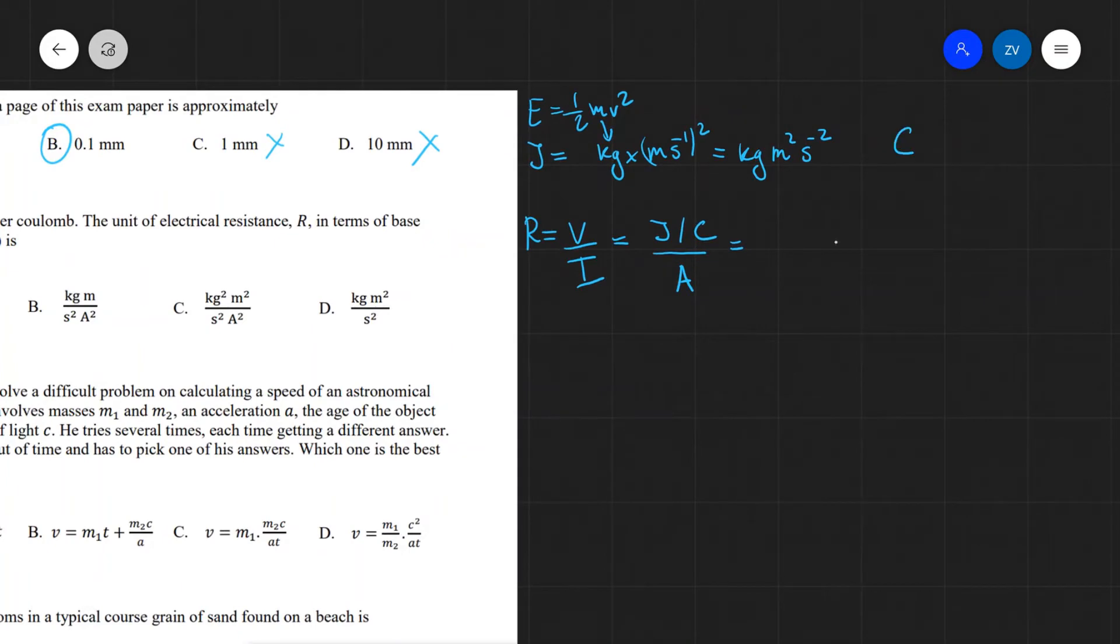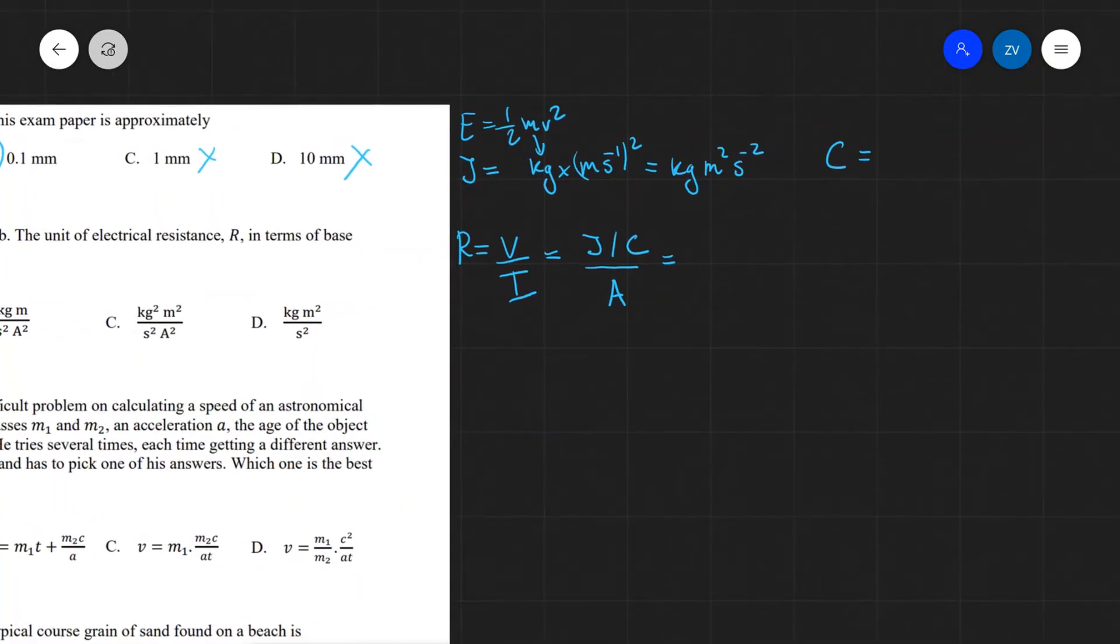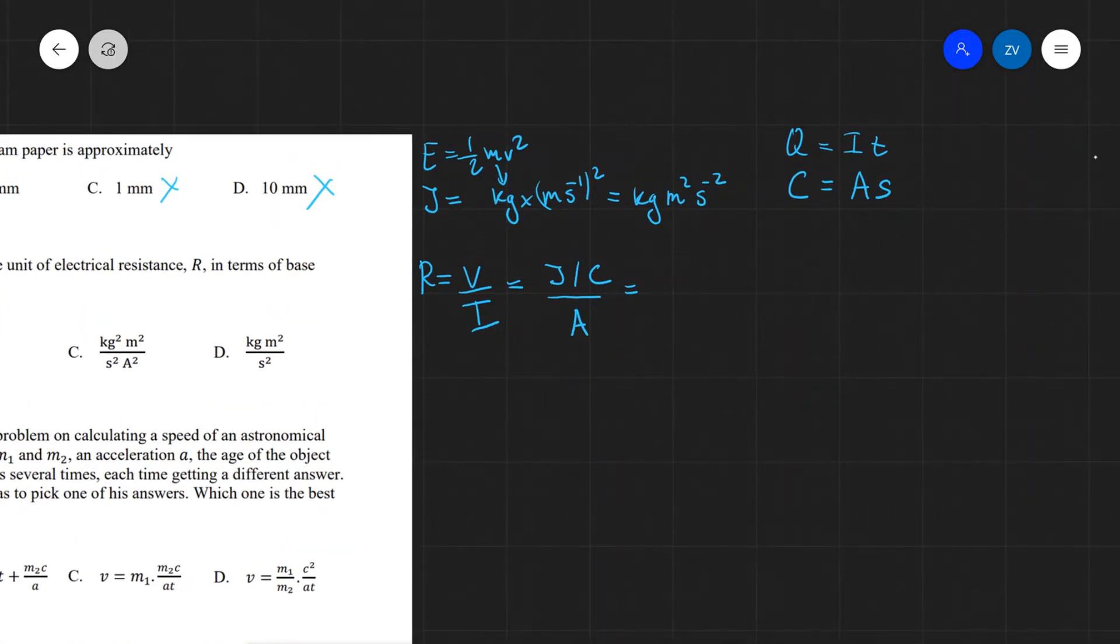Now our coulomb is going to be an amp second. The reason for that is because q is equal to it. So charge is current times time, therefore a coulomb is an amp multiplied by a second.